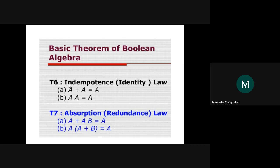Theorem 6 is the Identity Theorem: A OR A equals A, and A AND A equals A — the same variable combined with itself. Theorem 7 is the Absorption or Redundance Law: A OR (A AND B) equals A, and A AND (A OR B) equals A. The variable B is absorbed and vanishes.